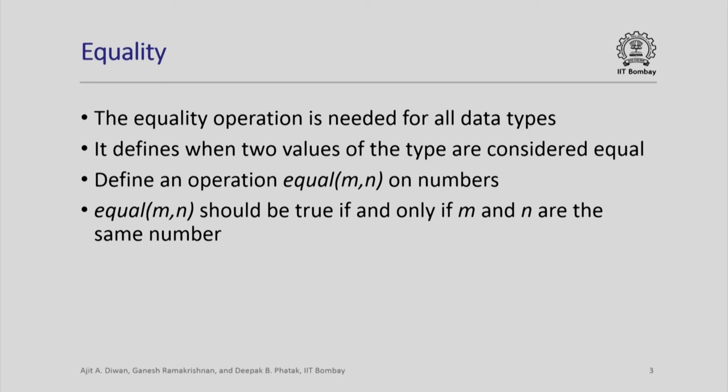Let us look at another such operation. This is typically required whenever you define any data type. For any data type, you have ways of constructing its values by different operations, but you need to specify when two values are considered to be equal. Typically there is a double-equals operator for any type in C++, which you need to define whenever you define your own type. So let us look at what we mean by when two numbers are equal.